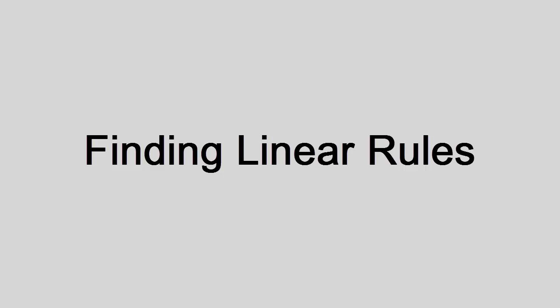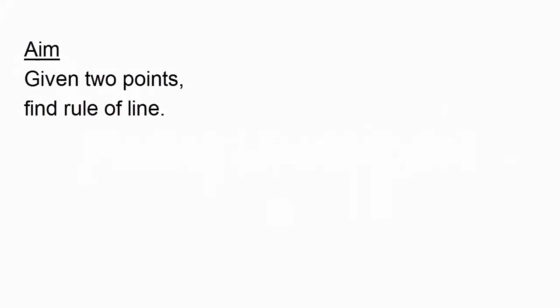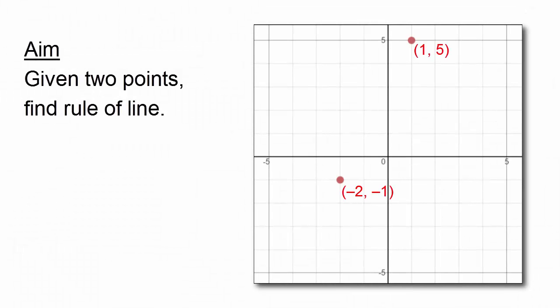In this video we're going to be looking at how to find a rule for a straight line given two points. If you have got two points, there's only one straight line that's going to pass through both of them, and we want to come up with a rule like y equals 2x plus 3 for that straight line.